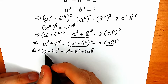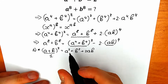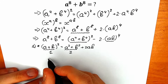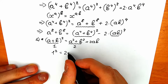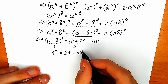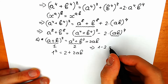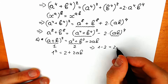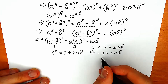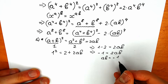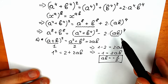From this identity, a plus b equals 1, and a squared plus b squared equals 2. So we have 1 squared equals 2 plus 2ab, which gives us 1 equals 2 plus 2ab. Therefore 1 minus 2 equals 2ab, so minus 1 equals 2ab, and we find ab equals minus one half.